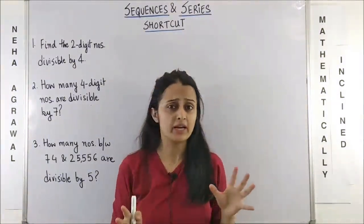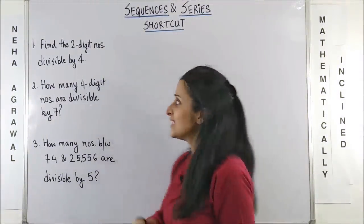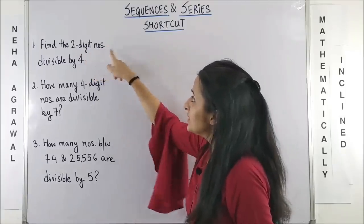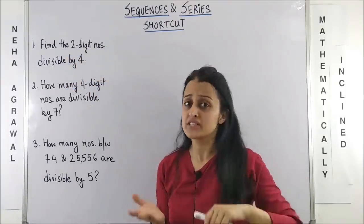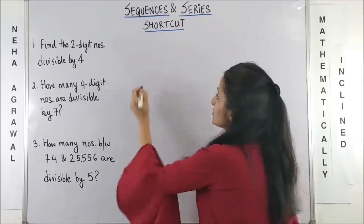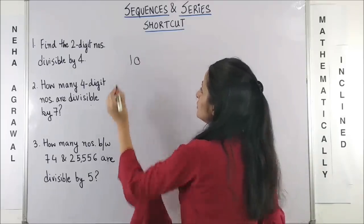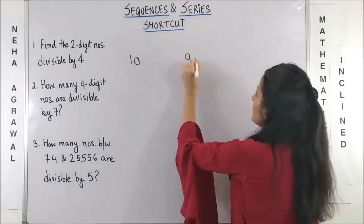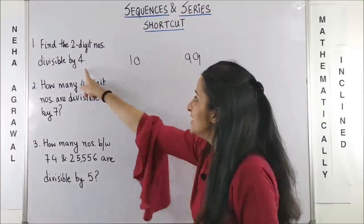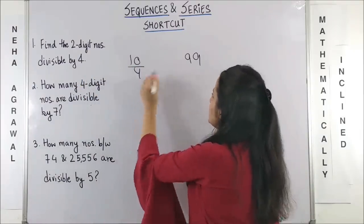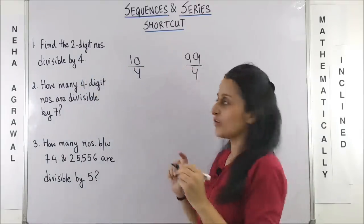So now what's the secret behind doing it so fast? Look at this question. Find the two-digit numbers divisible by four. So let's write down the two-digit numbers vary from 10 to 99. Now, it's not AP. Divisible by four means divide each of them individually with four.